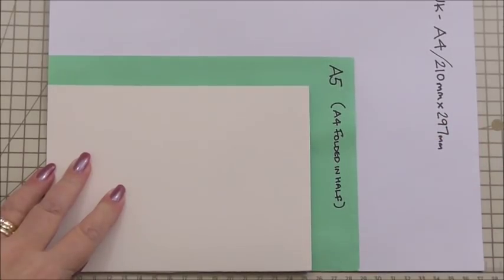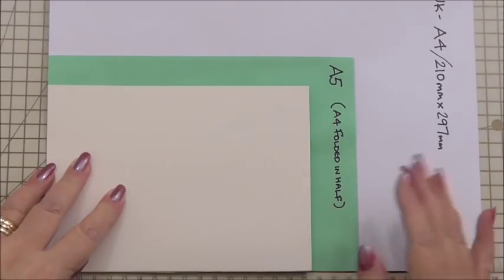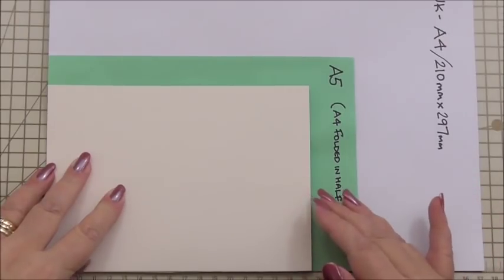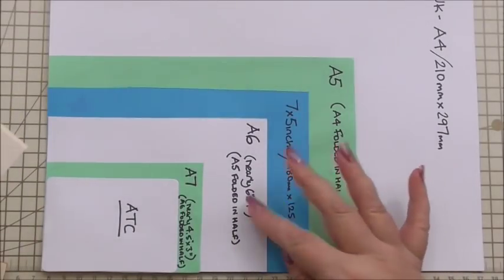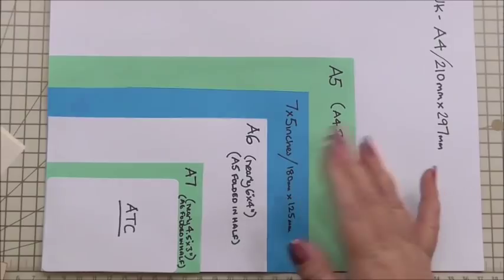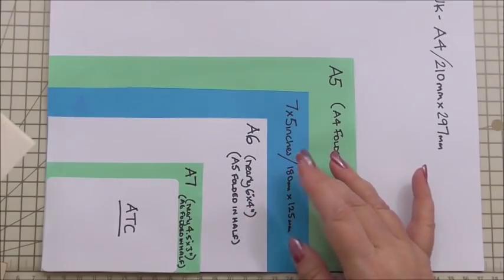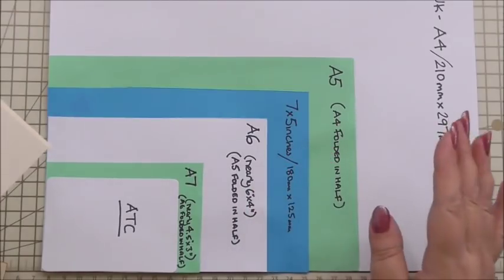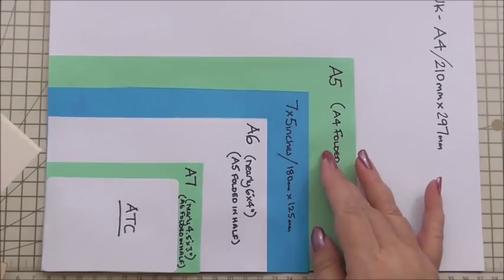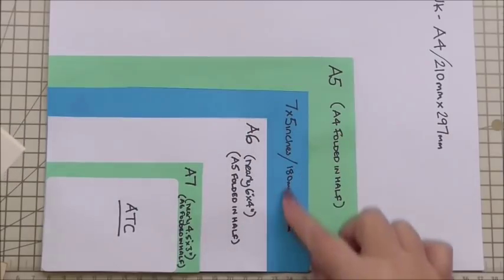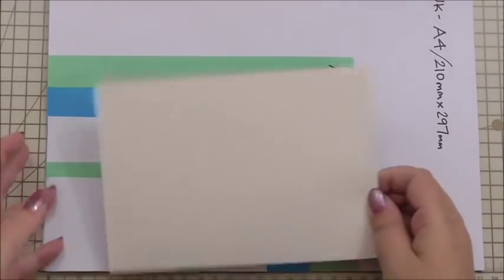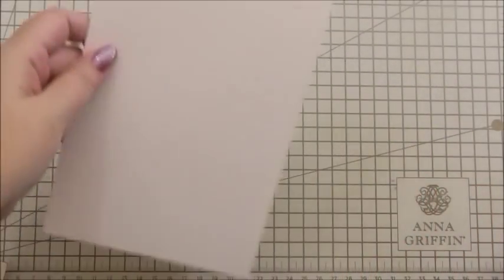For my US friends, I know you call that something different, but it's still A4 folded in half. And then seven by five is next, and then A6. A5 folded in half is A6, and we're in that middle, we're that blue one there. That gives you perspective at home of what size card we're actually going to use.